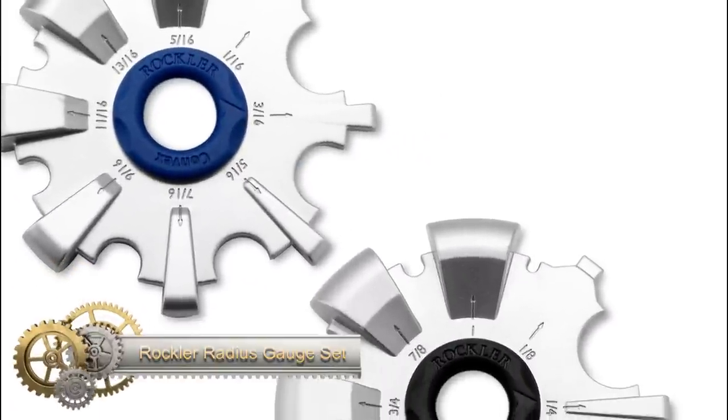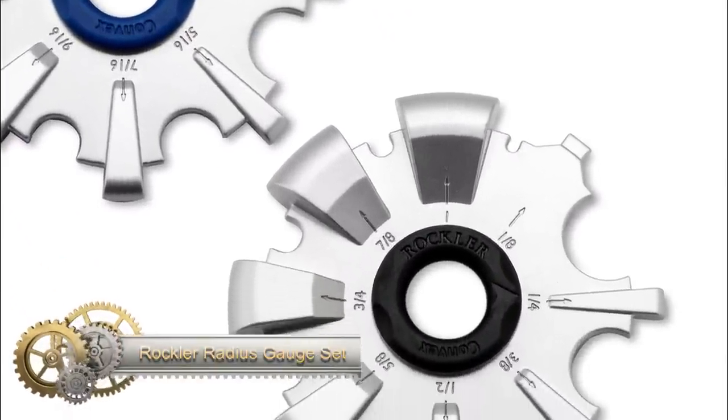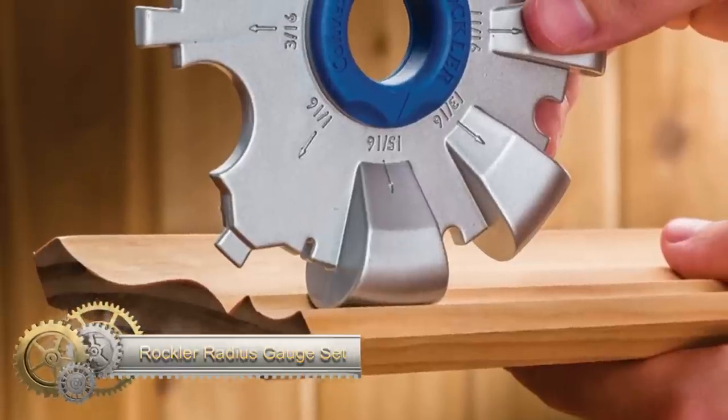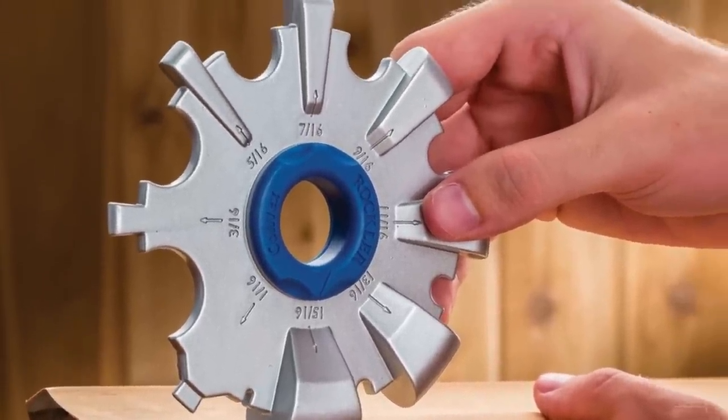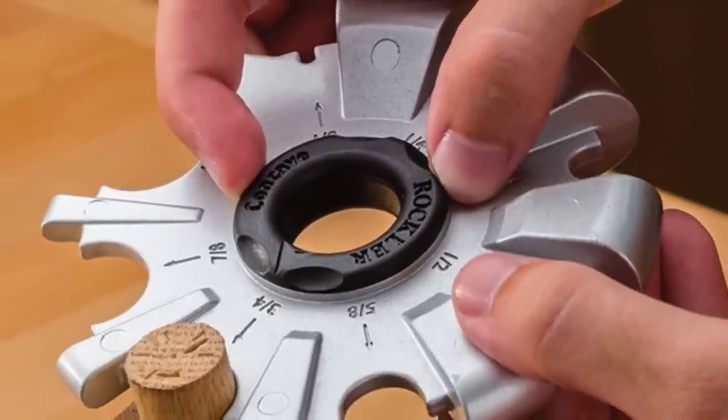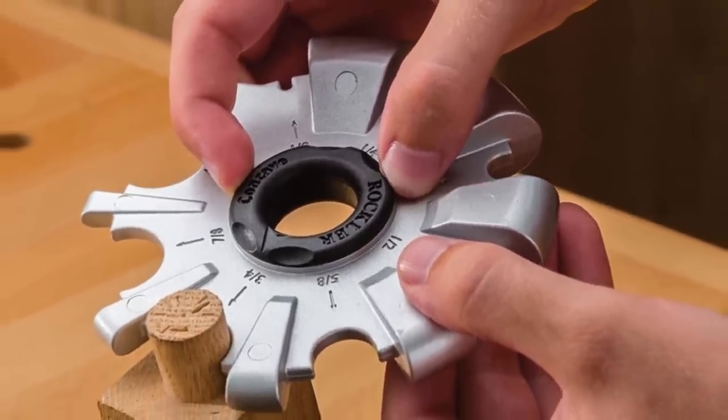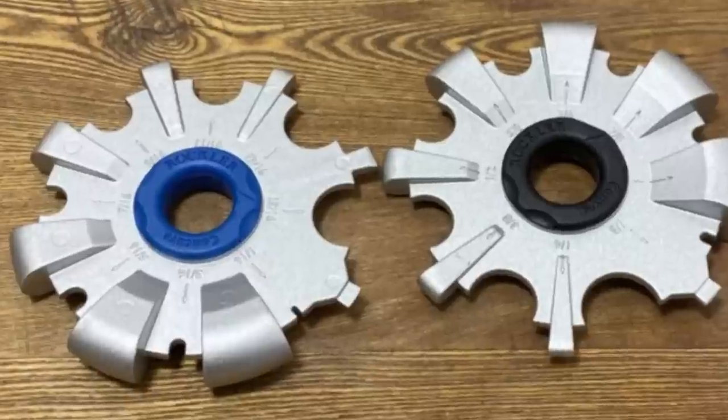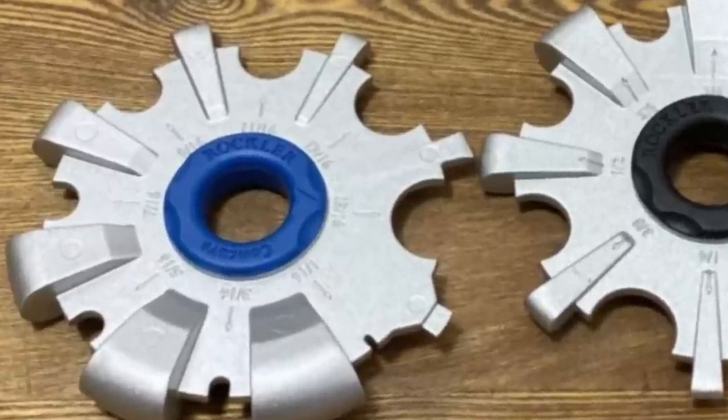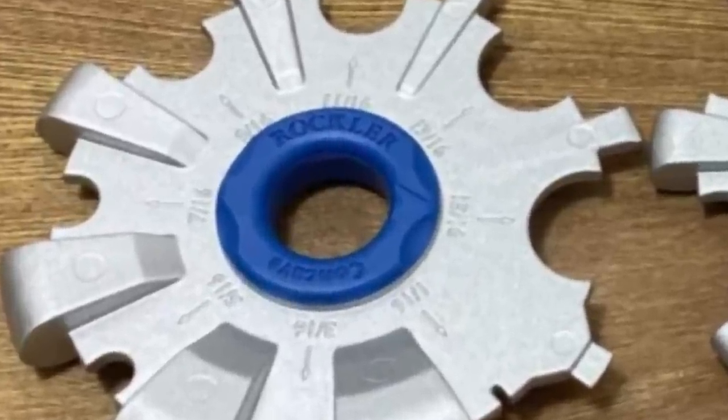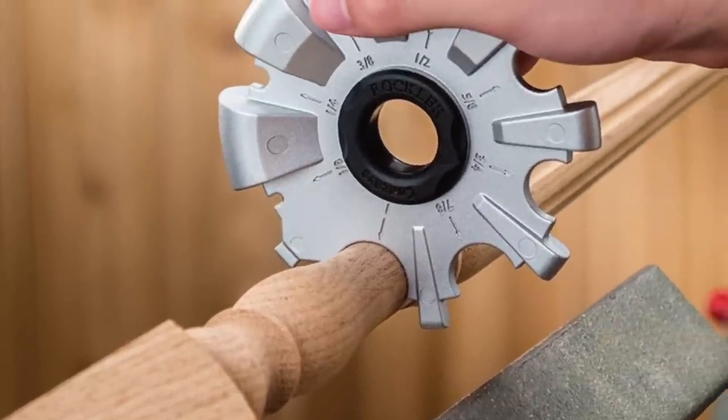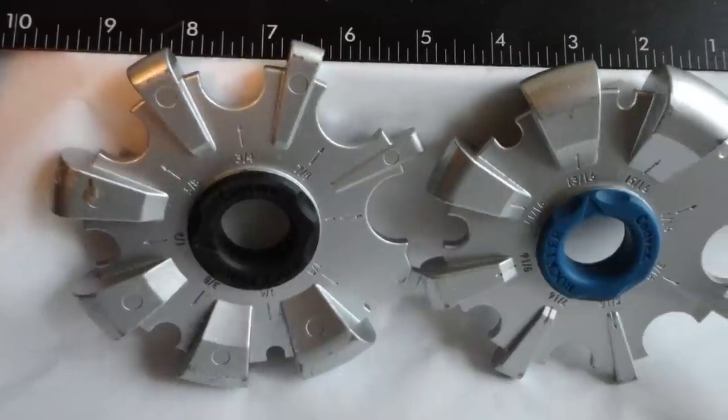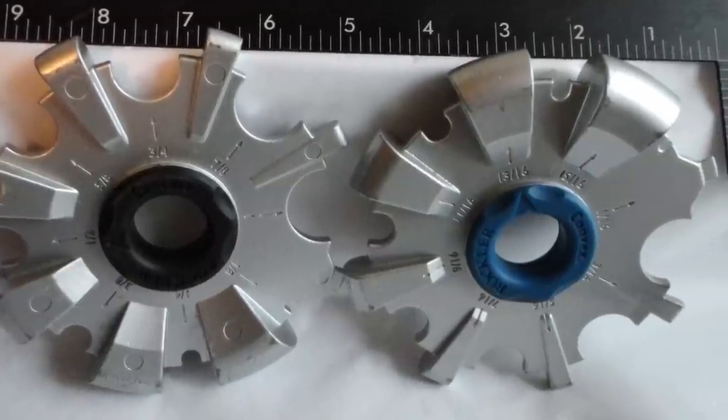The Rockler Radius Gauge Set is a compact and convenient tool that allows you to quickly measure both concave and convex curves. The set includes gauges for different sizes, all clearly marked with easy-to-read engravings and indicator arrows. Made from precision-machined aluminum, each tool includes both concave and convex gauges. The indicator ring in the middle rotates to point to the gauge you're using, ensuring accuracy and preventing user errors.